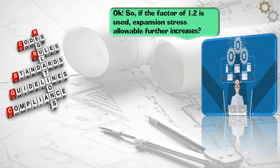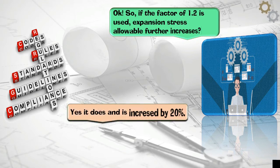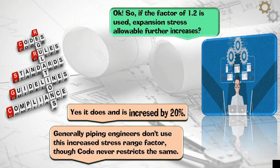So if the factor of 1.2 is used, expansion stress allowable is 80%. Generally piping engineers don't use this increased stress range factor, though code never restricts the same.